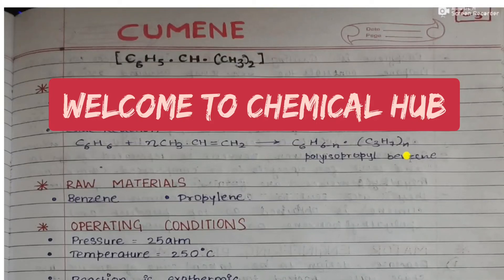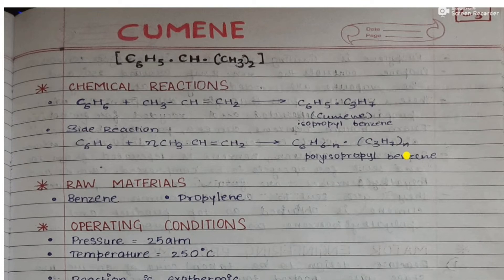Welcome to Chemical Hub. Today we are going to start a new topic called cumene. The chemical formula is C6H5CH(CH3)2. The main chemical reaction is: benzene plus propylene gets converted to cumene, that is isopropylbenzene. The side reaction is benzene plus n moles of propylene gets converted to polyisopropylbenzene.